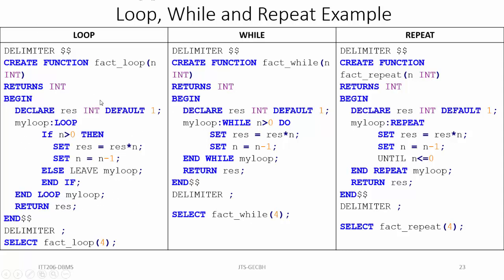After end if, we write 'end loop my_loop' semicolon. This is a simple function to find the factorial of a number using loop. The syntax is: loop name, colon, the loop keyword, then the IF condition. Inside the if we write statements to execute when the condition is true, and in else we give 'leave my_loop' to exit. Since we wrote loop, we must close with end loop and the loop name.